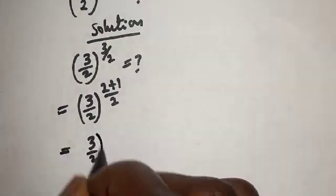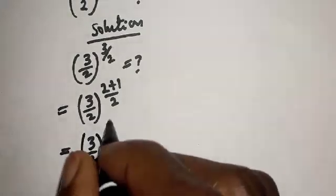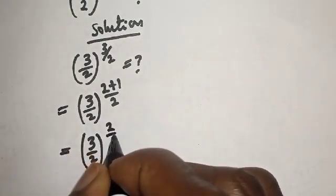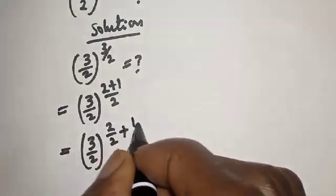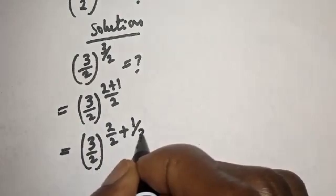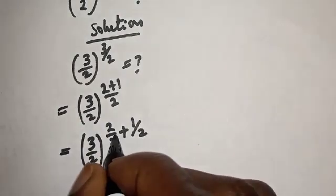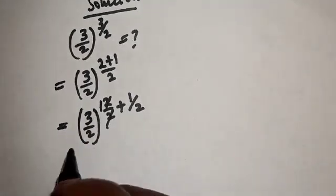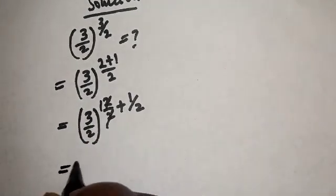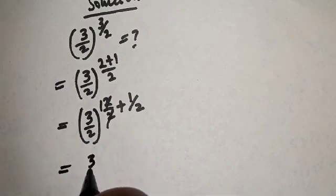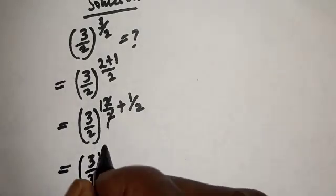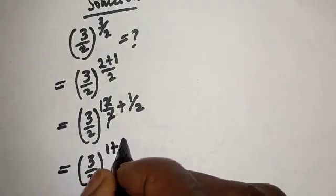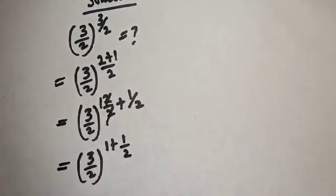This is equal to three over two to the power of two over two plus one over two. The two over two cancels to one, giving us three over two to the power of one plus one over two.